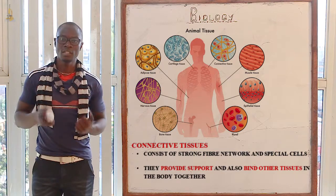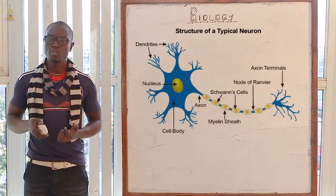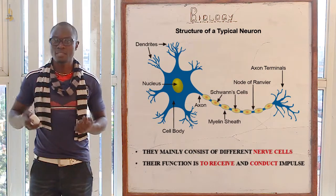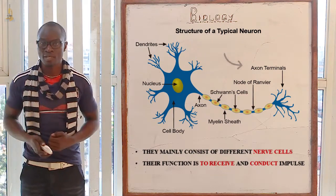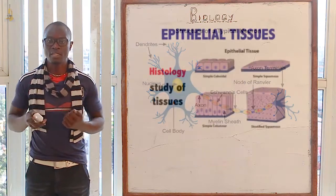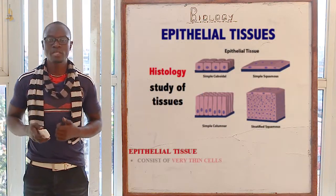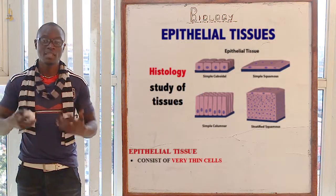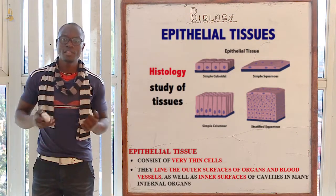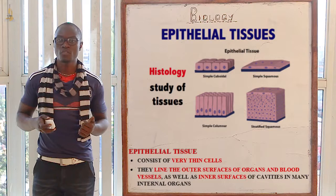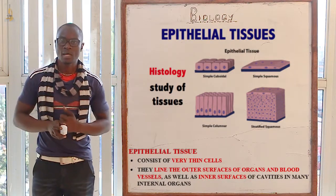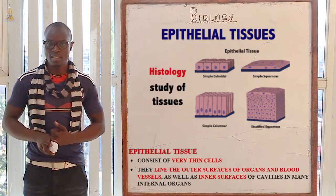The next tissue we have is the nerve tissue, which mainly consists of nerve cells. They receive and transmit impulses — that is the function of the nerve tissue. The next tissue is the epithelial tissue, which mainly consists of very thin cells. The function of the epithelial tissue is to protect the inner tissues from damage or from any other agent of damage.